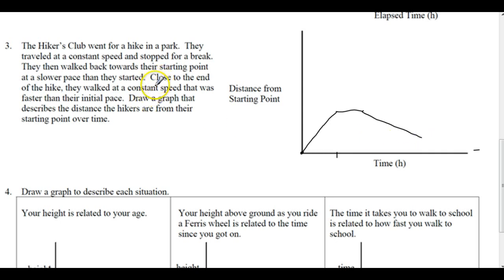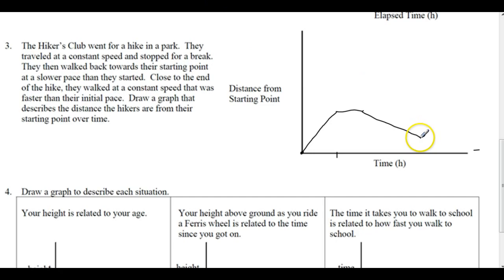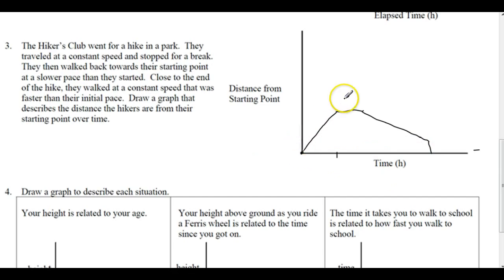A slower speed means we're going to cover this distance but spend more time than the initial segment took — so we drag it out, making it a longer amount of time heading back. Close to the end of the hike, they walked at a constant speed faster than their initial pace. So we take the line down and then go faster — we run the last bit. What we're relating is distance to time. When you move at a constant speed, you cover the same distance in each equal time interval.